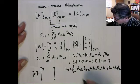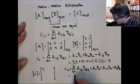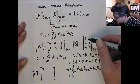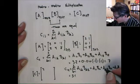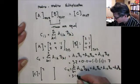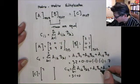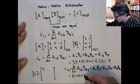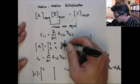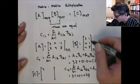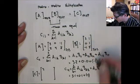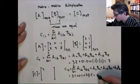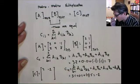And that would be a11 is 3, b12 is 1, a12 is 0, b22 is 1, and then finally a13, that's minus 1, b32, that's 5, and that'll equal 3 plus 0 minus 5, which is minus 2, so this value here would be minus 2.